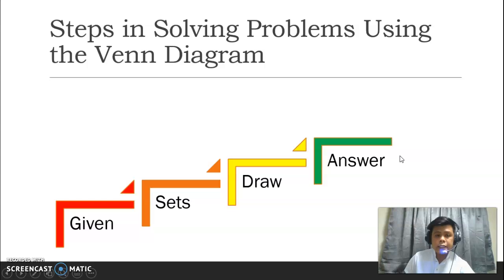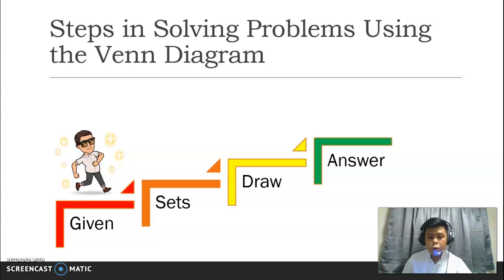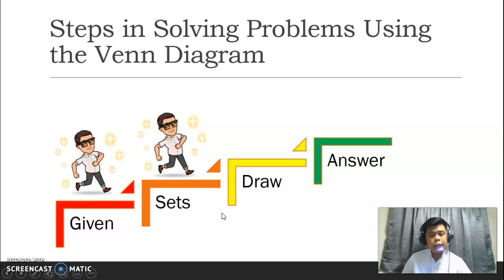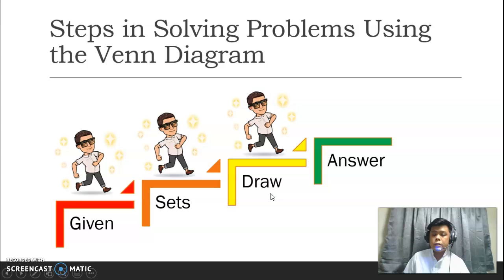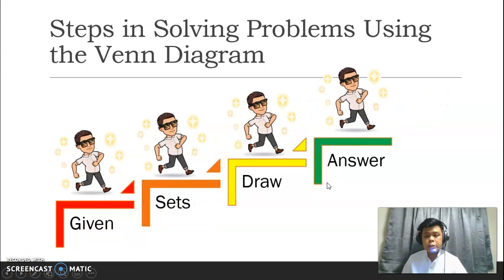Now, let us discuss about the steps na kailangan natin pagdaanan kapag tayo ay nagsosolve ng problems using the Venn diagram. Actually, we have 4 steps. The first one is given. After you read and analyzed the problem, ilista nyo kung ano yung mga given, ano yung mga information na meron tayo na sinabi ng problem. Next, after nating masusing pinag-aralan yung mga given ng problem, isipin natin or tukuyin natin ilang sets yung gagamitin natin. Ilang grupo ba yung mga pinag-uusapan natin? Pwedeng dalawa, pwedeng isa, pwedeng tatlo. It depends sa problem. Next naman, step 3 is we will draw the Venn diagram. Syempre, dapat ilabel na rin natin yung mga elements na meron yung bawat set. And then, the last step is to answer the questions.